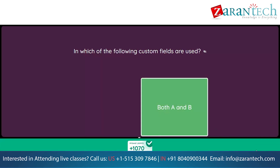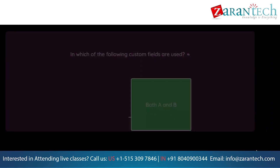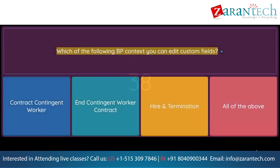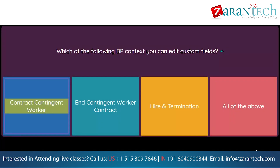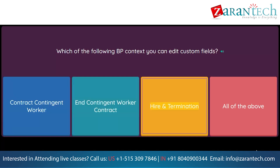Which of the following BP contexts can you edit custom fields? Option 1: Contract contingent worker. Option 2: End contingent worker contract. Option 3: Hire and termination. Option 4: All of the above.